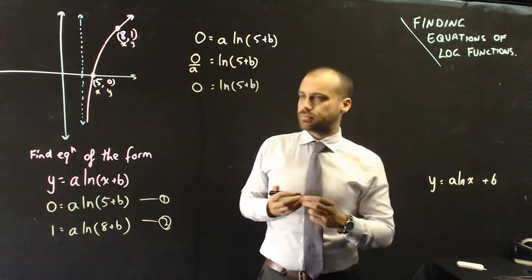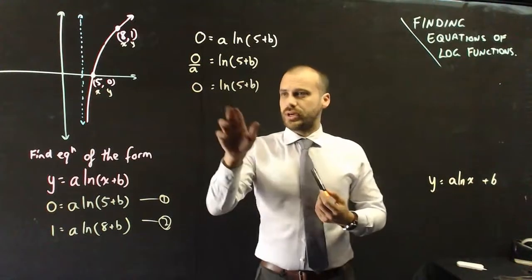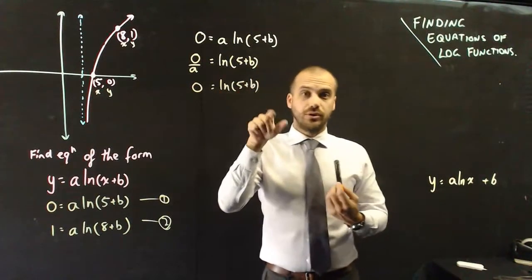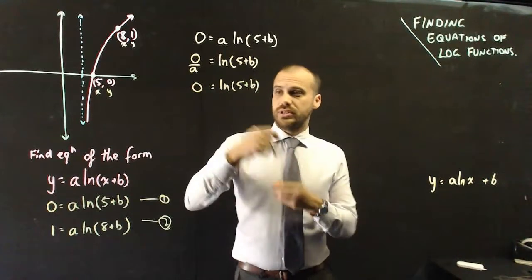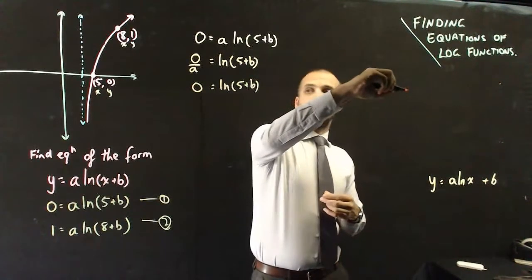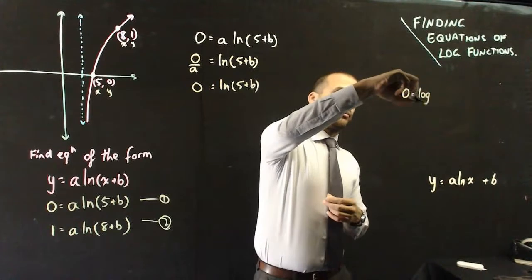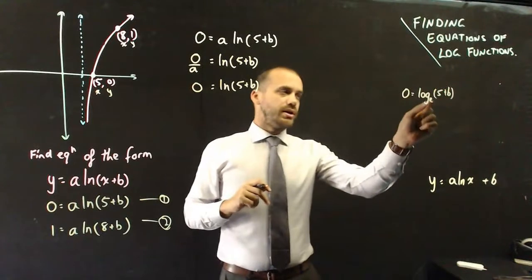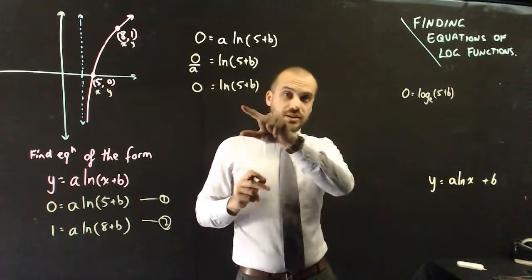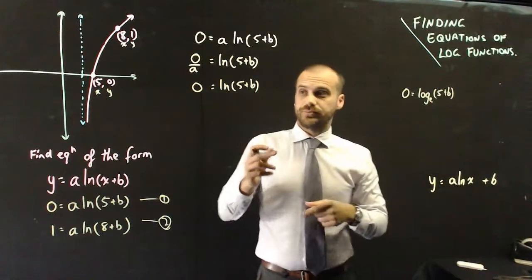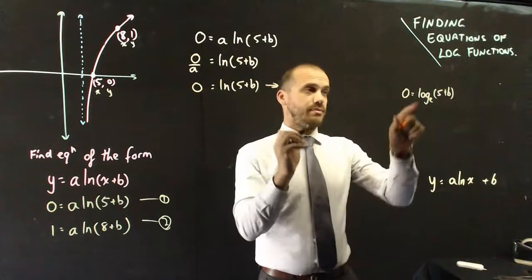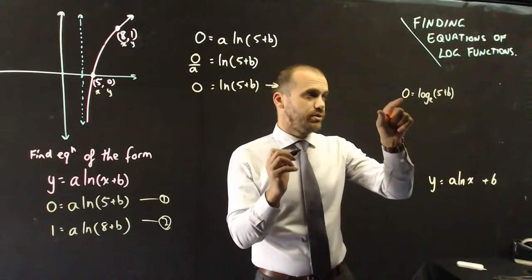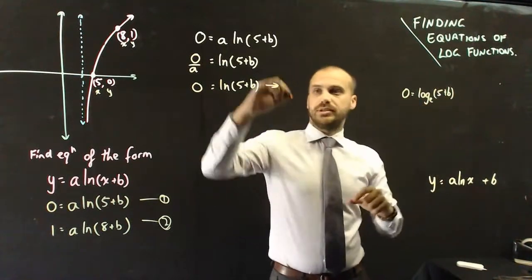Okay. Now you should know that ln stands for log base e. So this actually says, I'll just write it over here, 0 equals log base e of 5 plus b. So I can rearrange this. I can write this in exponential form.